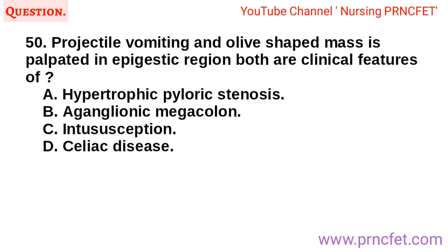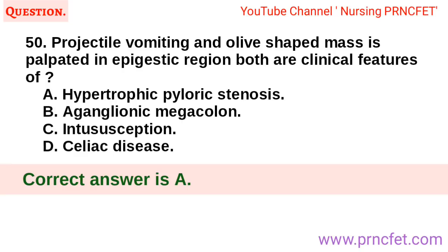Question 50: Projectile vomiting and an olive-shaped mass palpated in the epigastric region — both are clinical features of: A. Hypertrophic pyloric stenosis. B. Aganglionic megacolon. C. Intussusception. D. Celiac disease. Correct answer is A. Hypertrophic pyloric stenosis.